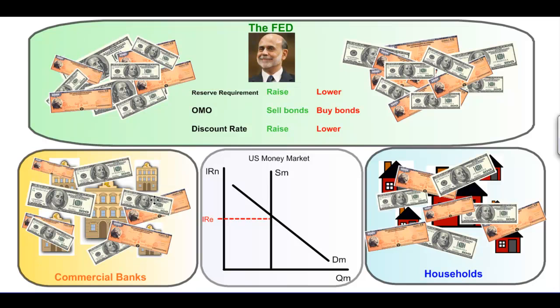Historically, the reserve requirement in the United States has rarely been changed. Most recently, it stands at around 10%, or 0.1 — commercial banks must keep 10% of their total deposits from households on reserve at the central bank. So the reserve requirement is a relatively unused tool of monetary policy.